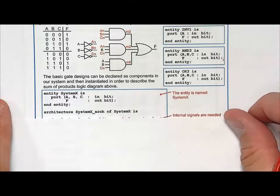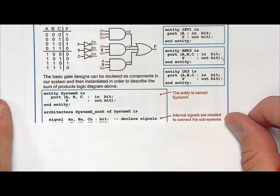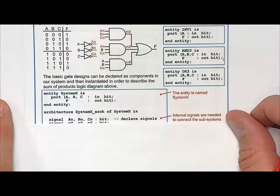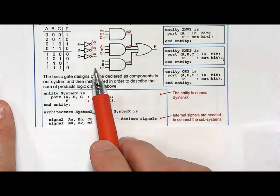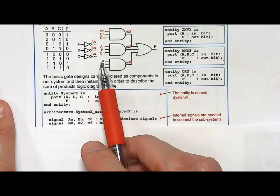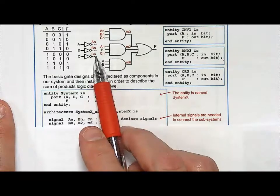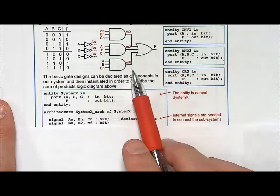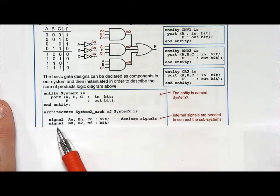And then we come down here, and it's time to do our declarations. Well, when we do this, we also need internal signals. So let's do our signal declarations first. So we're going to have AN, BN, CN, and we're going to have M0, M2, and M6. So we declare those using signal declarations.